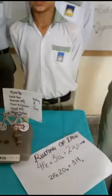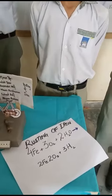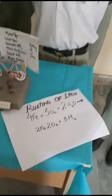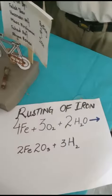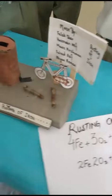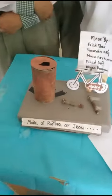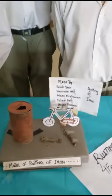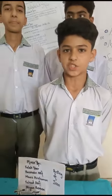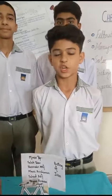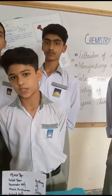Assalamu alaikum. My name is Aliaan from Class Pre-9. This is the chemical equation for Rusting of Iron. It includes 4 iron atoms plus 3 oxygen atoms plus 2 water molecules, giving 2 units of iron oxide plus 3 hydrogen atoms.